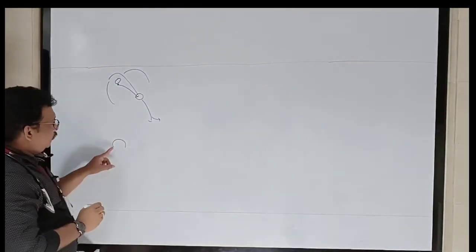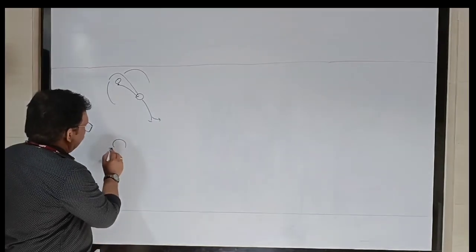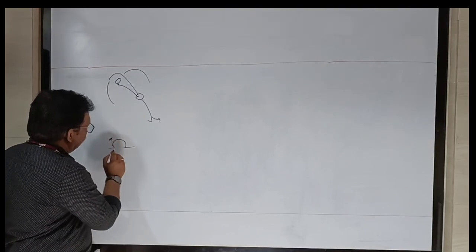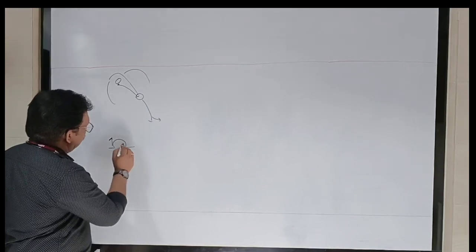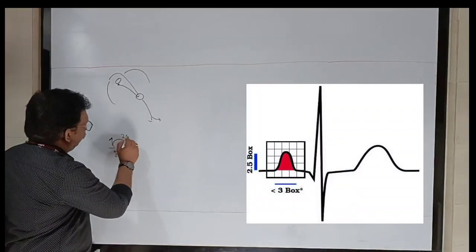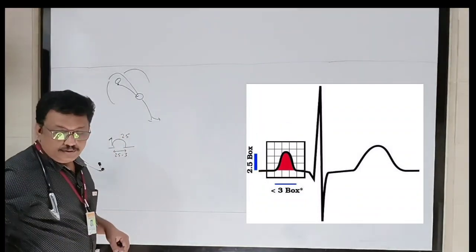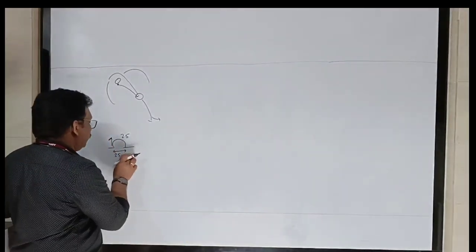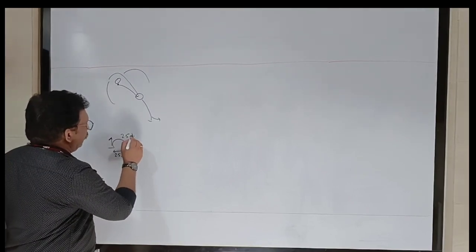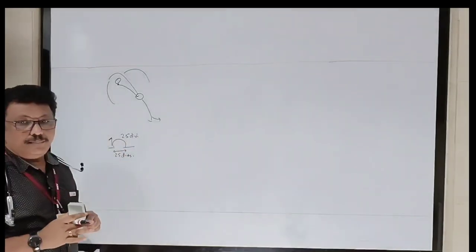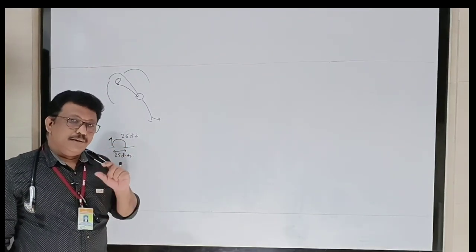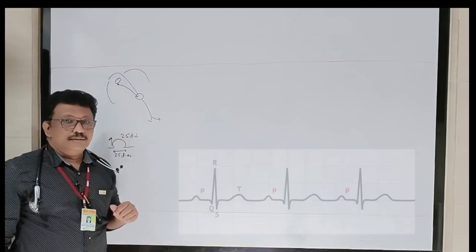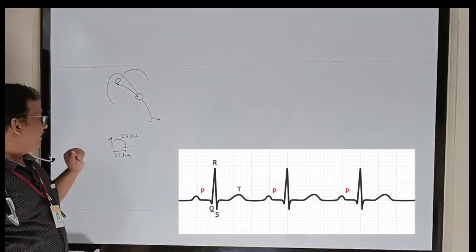This is a dome-shaped P wave. You can see the length and height of the P wave. The length is maximum 2.5 small squares, and the height is also maximum 2.5 small squares. This is a normal P wave when it originates from the SA node — every P wave in the rhythm strip will be monomorphic, same morphology, height 2.5 divisions, width 2.5 divisions.